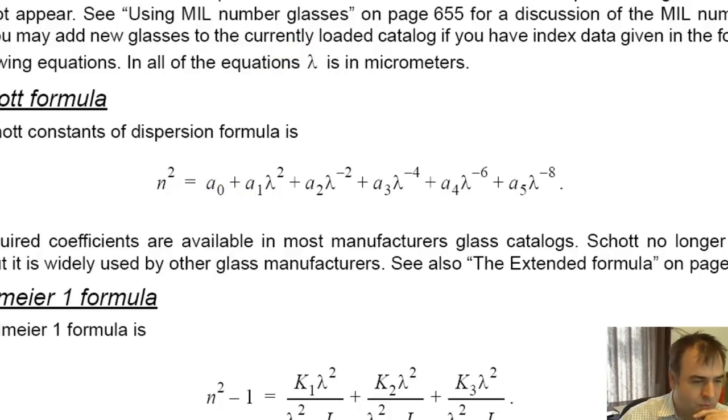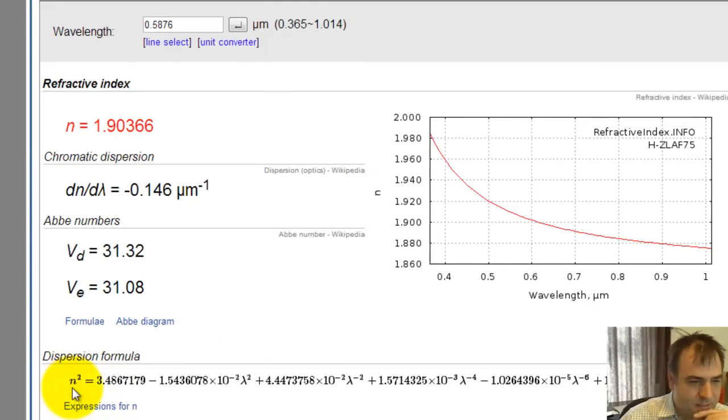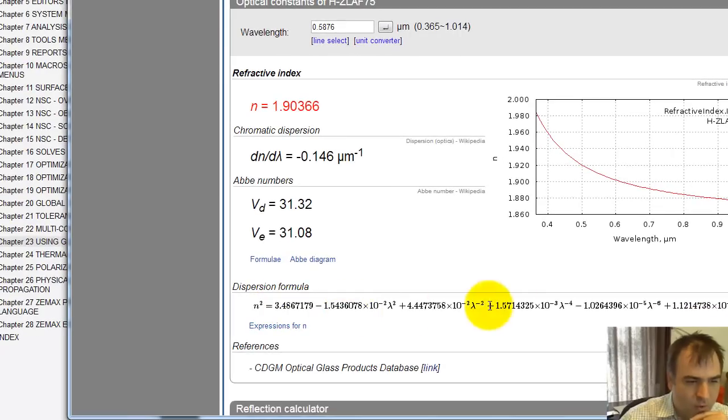Why are there so many equations? The physics of dispersion, index of refraction versus wavelength, is complicated. Every glass formulation is slightly different. You want very high fidelity, six or ten decimal places for how index varies with wavelength. The more fidelity you have, the higher fidelity your optical model. Here's the Schott formulation.